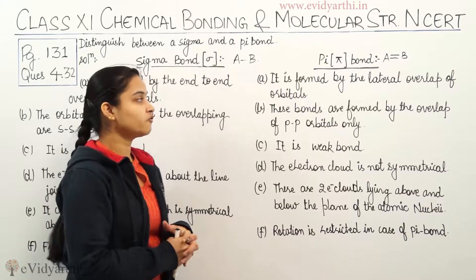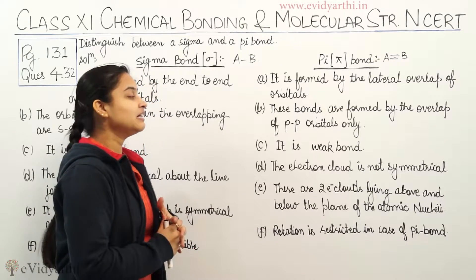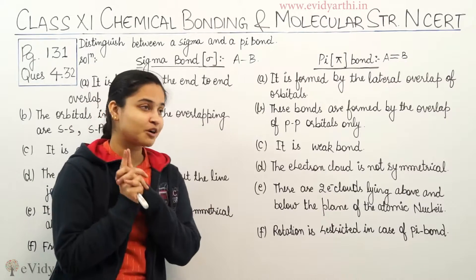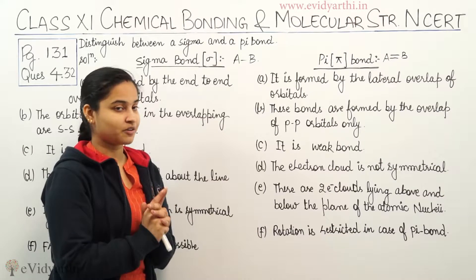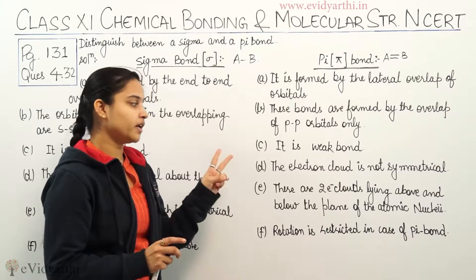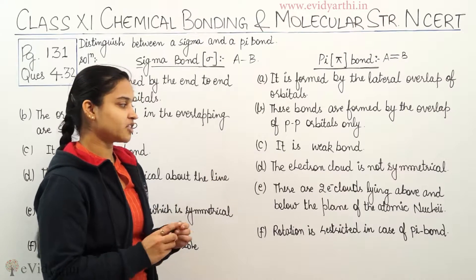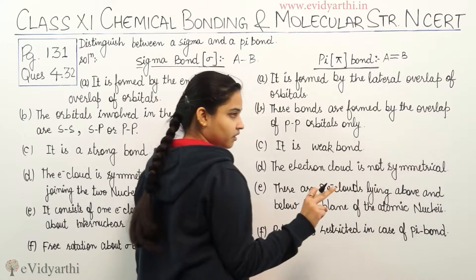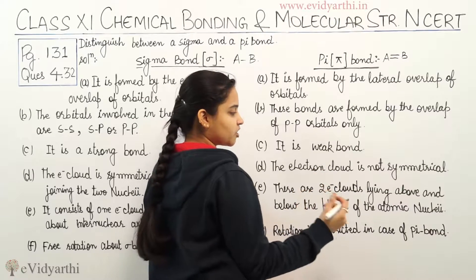Moving on to the pi bond, which is formed by the lateral overlap of the orbitals. These bonds are formed by the overlap of PP orbitals only. It is a weak bond. The electron cloud in pi bond is not symmetrical. There are two electron clouds lying above and below the plane of atomic nuclei.